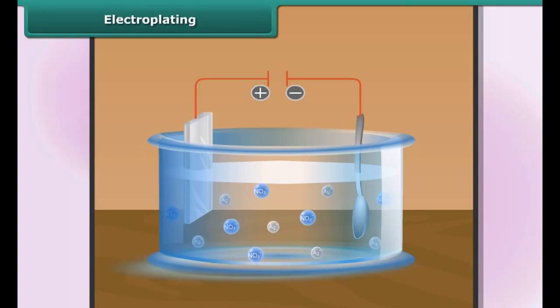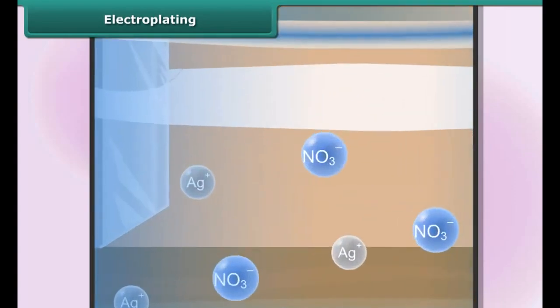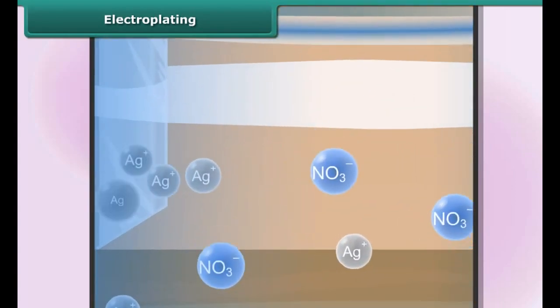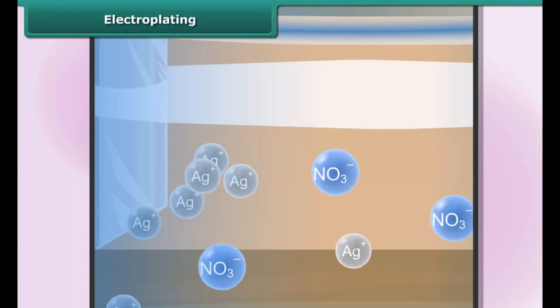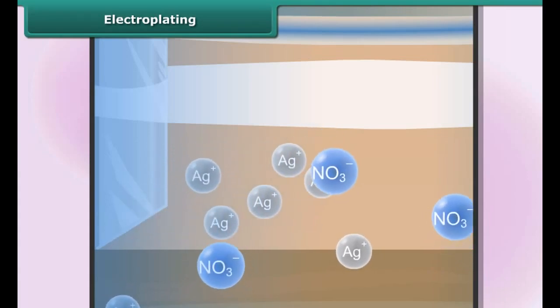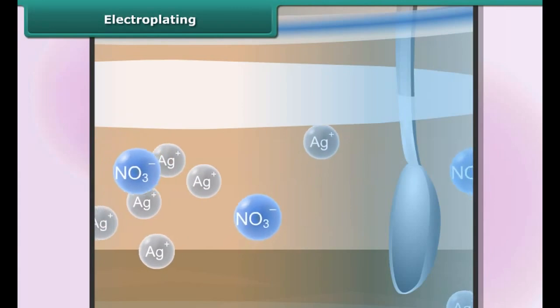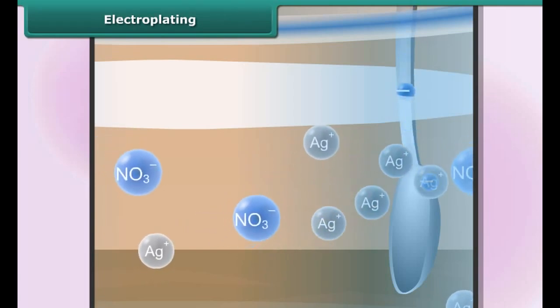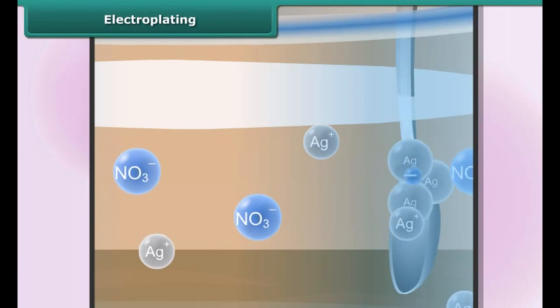Thus the spoon acts as the cathode in the electrolysis while the bar of the metal acts the anode. The electrolyte is a solution of salt that contains the ion of the anode metal, for example silver nitrate. As soon as electric current starts flowing through the solution, electrons begin to escape from the silver anode.